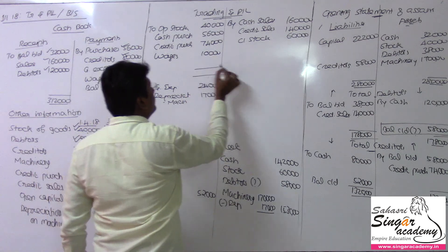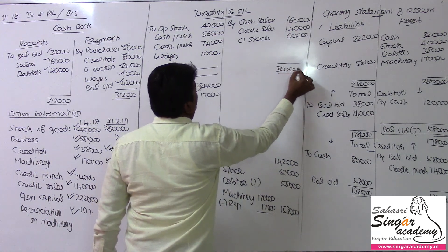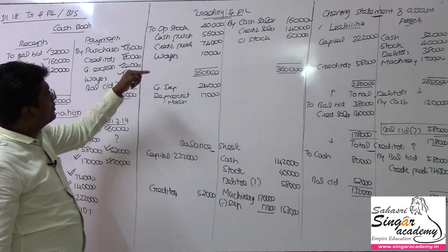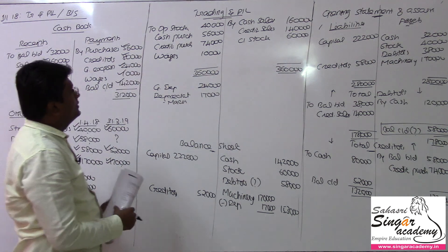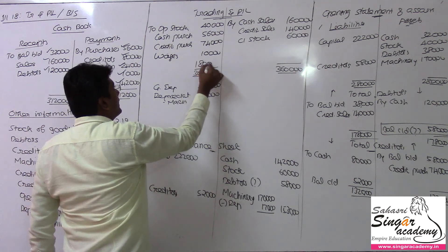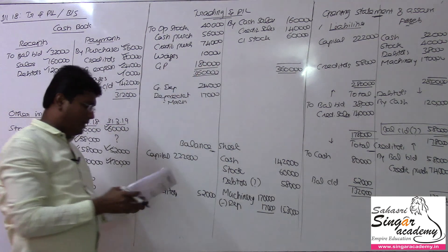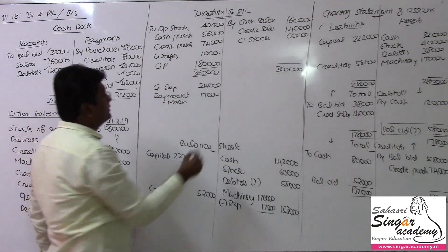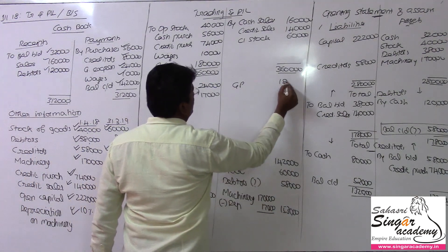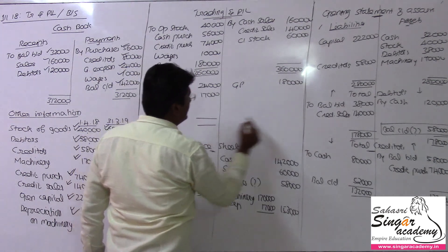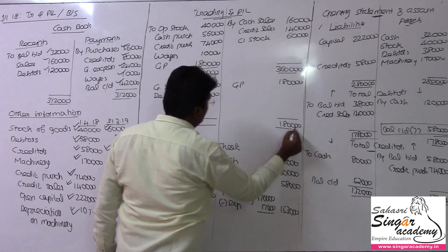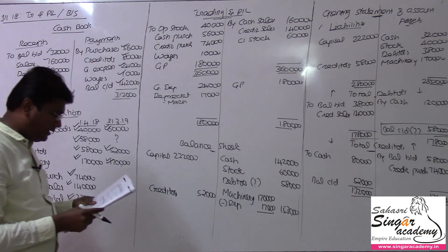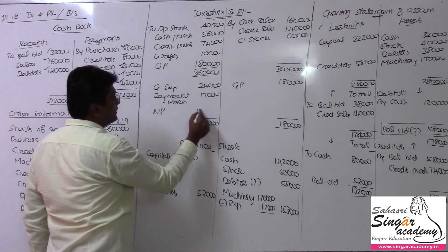Calculating Gross Profit: total sales of 3,60,000 minus purchases of 40 plus 56 plus 74 equals 1,70,000 — giving cost of goods sold of 1,80,000. Gross Profit is 1,80,000 rupees. After deducting expenses of 41,000 from the Profit and Loss Account, net profit is 1,39,000 rupees, which is transferred to the balance sheet.